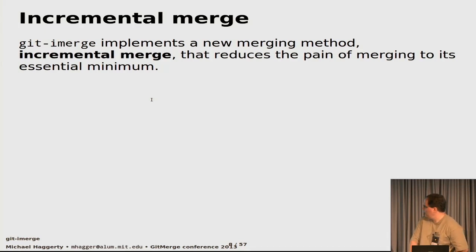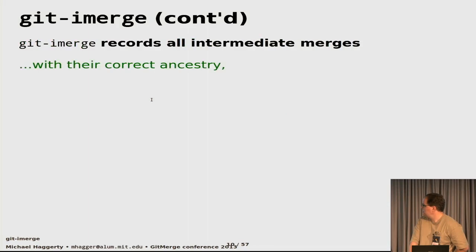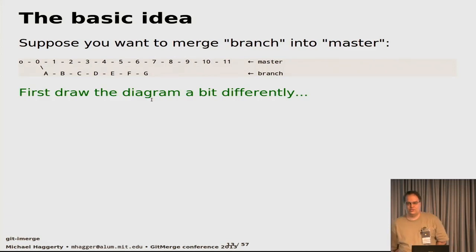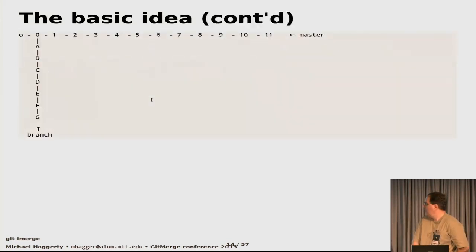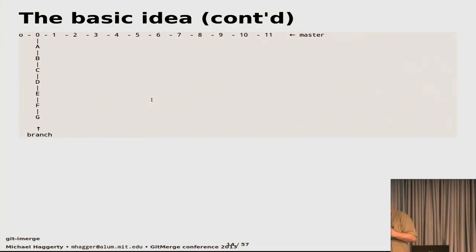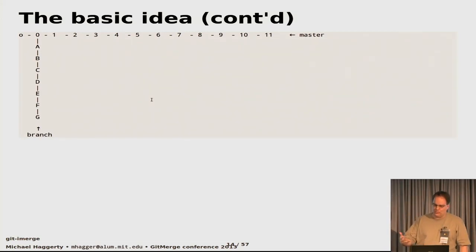I'm going to skip ahead a little bit and come back to summarize the advantages of incremental merge. First, a sketch of the basic idea. Suppose you want to merge a branch into master. You have some commits on master, some commits on branch, and you want to bring them together. The first step is to draw the diagram differently — branch commits down the left side. The main problem with merge is you've got so many changes on both sides to bring together at once. So let's do the smallest thing possible: just merge the very first commit on master with the very first commit on branch.